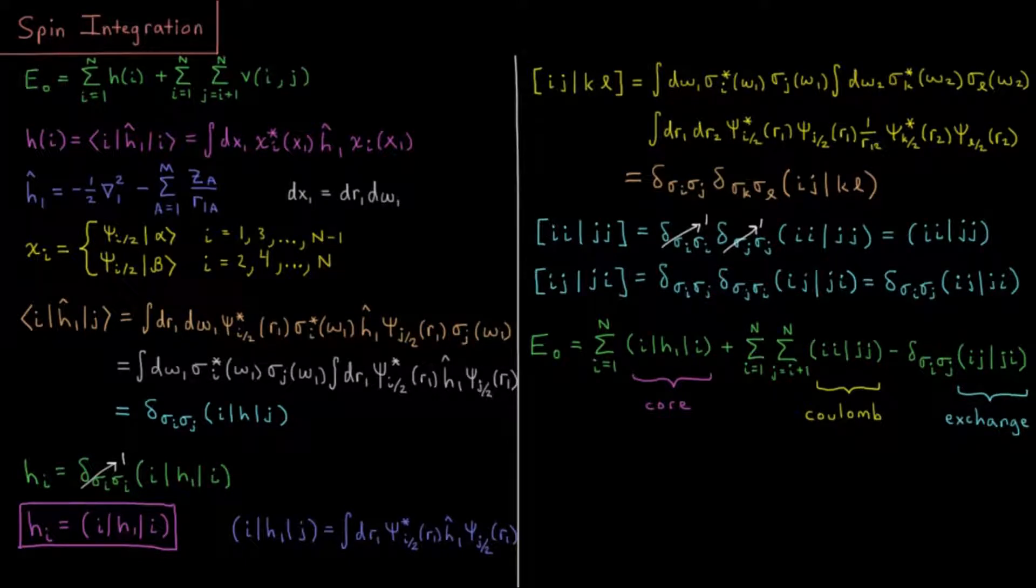This video will discuss spin integration of integrals in restricted Hartree-Fock. We mentioned in previous videos that we have the energy of our ground state determinant, which is equal to the sum over all electrons i equals 1 to n of the core Hamiltonian energy, or the core energy of that electron - its kinetic energy plus its attraction to all the nuclei.